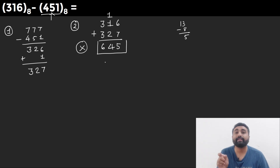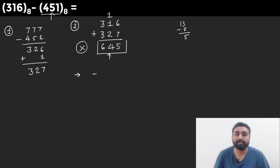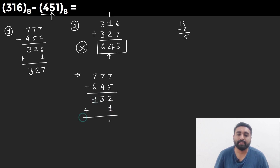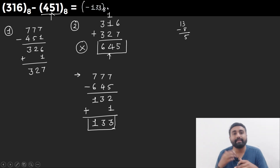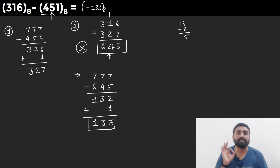Since the answer is negative, we need to find the 8's complement of the result 645. Subtracting from 777 gives 7's complement: 1, 3, 2. Adding 1 gives 133. So the final answer is negative 133. There is no carry, which clearly means the answer is negative.